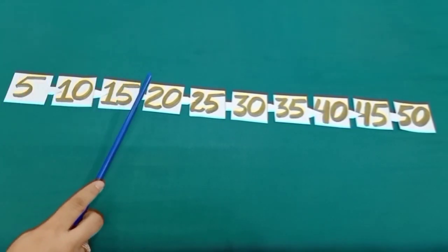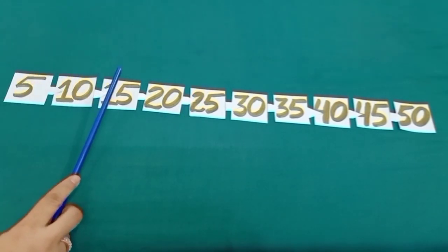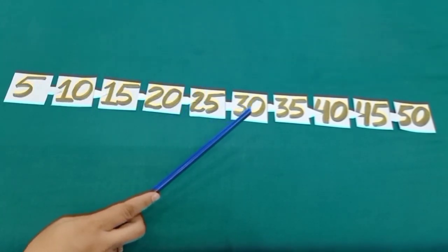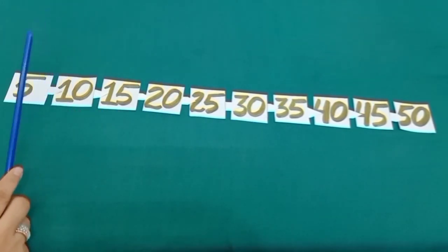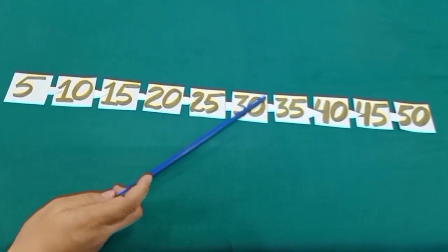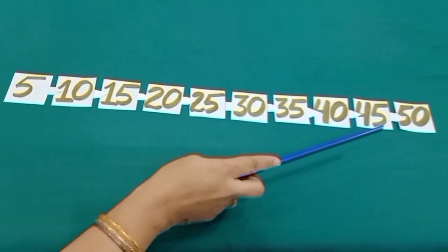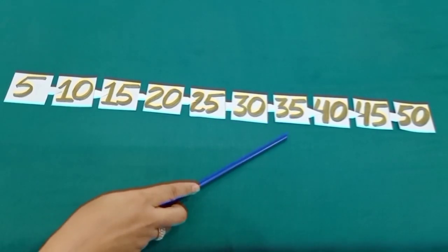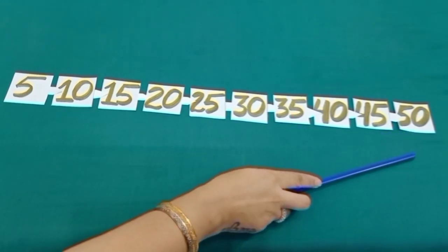5, 10, 15, 20, 25, 30, 35, 40, 45, 50. We can count up to 50.